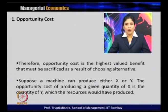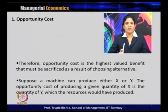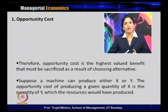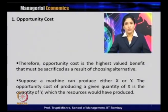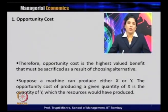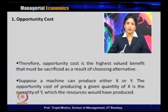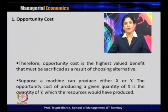Consider an example: suppose a machine can produce either X or Y. With available resources, either it produces X or Y. The opportunity cost of producing a given quantity of X is the quantity of Y the resources would have produced. When evaluating the opportunity cost associated with X, it is always expressed in terms of Y, and if evaluating the opportunity cost of Y, it is always in terms of X.